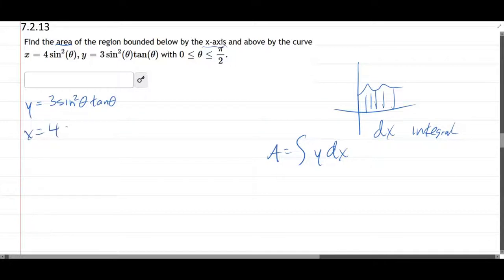Now, regular x is 4 sine squared theta. dx is going to be x prime times dt. So what is x prime? 4 times 2 is 8, sine theta times the derivative of sine, which is cos theta. So that's dx.